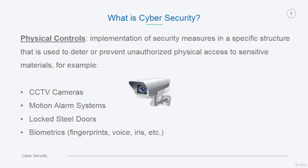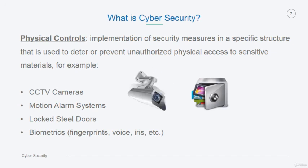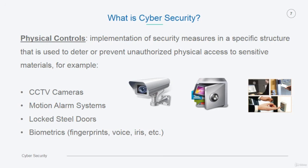The third level of security controls is the physical controls, which is the implementation of security measures in a specific structure used to prevent unauthorized physical access to sensitive materials. For example, we have CCTV cameras, motion alarm systems, locked steel doors, biometrics including voices, iris, and fingerprints.